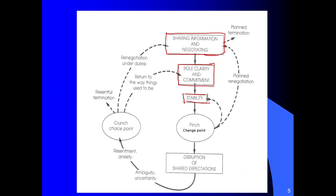And then what happens is you run into a pinch point or a change point. And this is when something happens which invalidates the roles and the commitment that have already been established. And I'll get to an example in a little bit. And so what this pinch causes is a disruption of shared expectations. It leads to uncertainty and ambiguity. That is, we don't really know what's going on. We feel that things are left undecided.